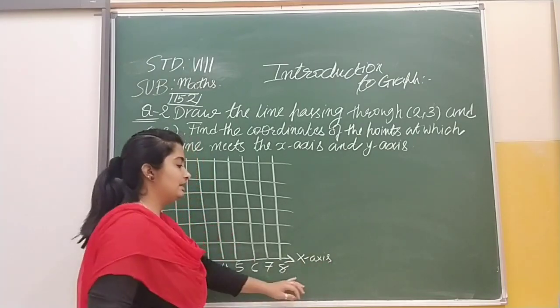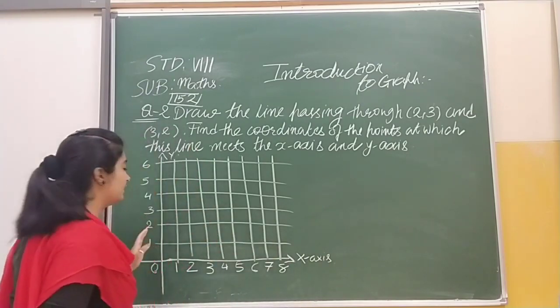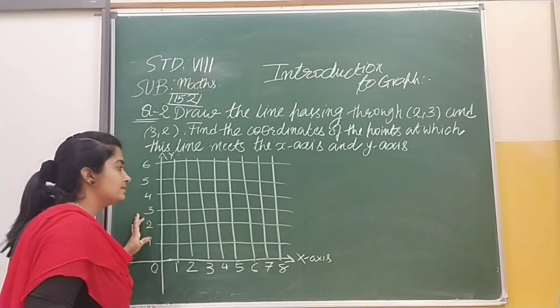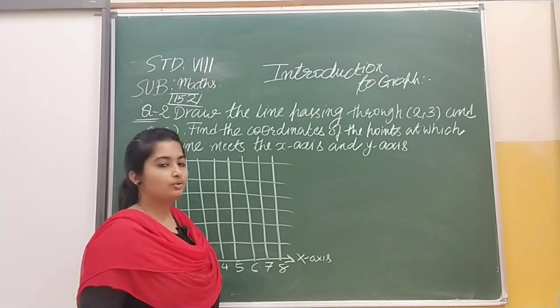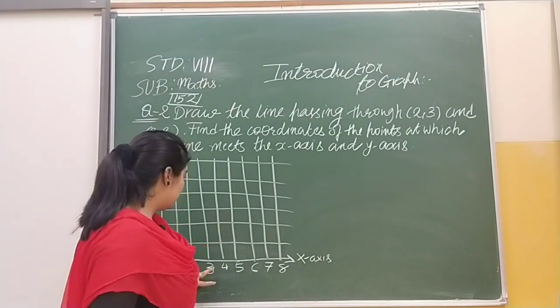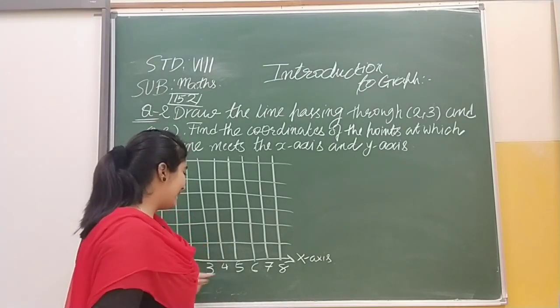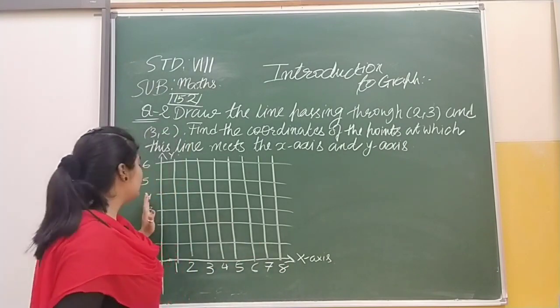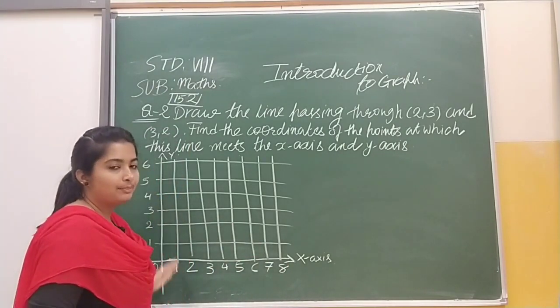We all know that the horizontal line is the x-axis and the standing line is our y-axis. In your graph book you have to draw two lines - the horizontal line and the standing line.